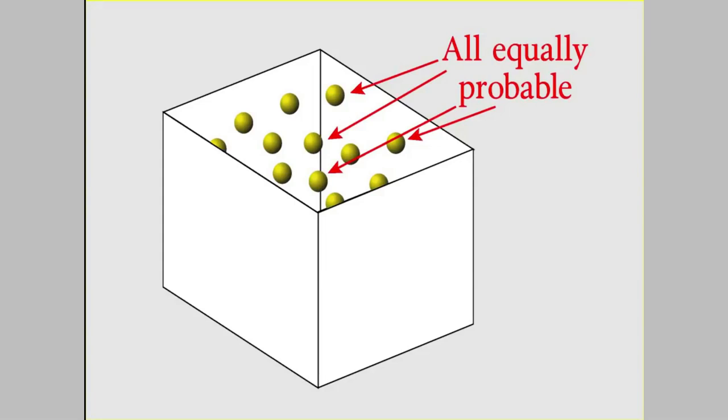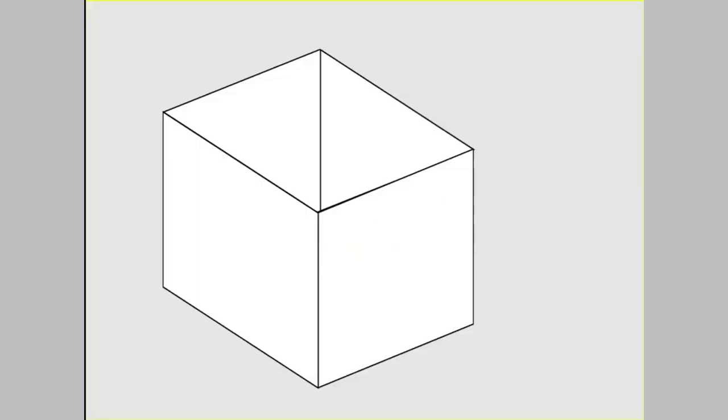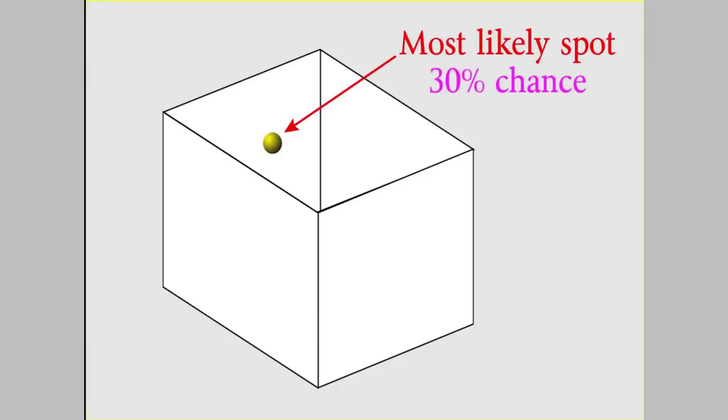In that case, you'd say the probability of finding the particle is the same everywhere in the box. The wave function for that would just look like a sine wave. It would fill the whole box, and the peaks would have the same amplitude everywhere. But now suppose I told you the particle is most likely to be at one particular place in the box. Let's say it has a 30% chance of being at that spot.